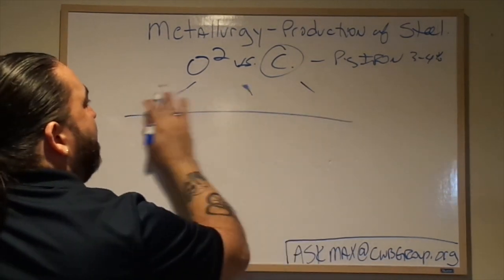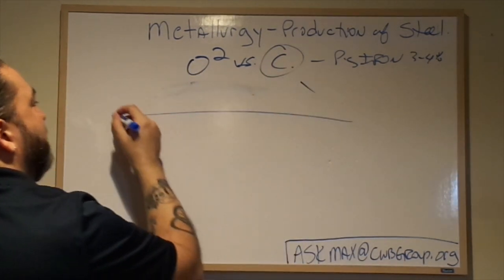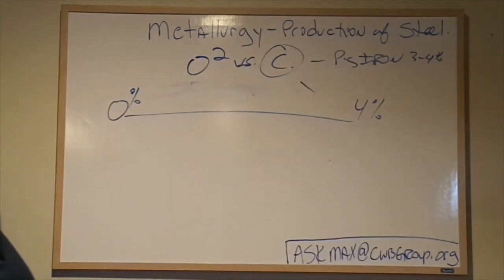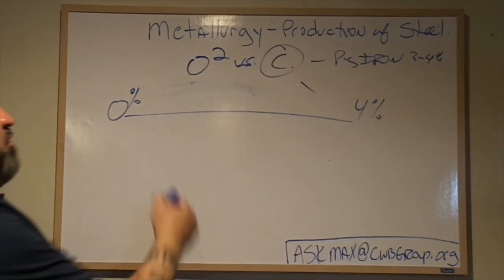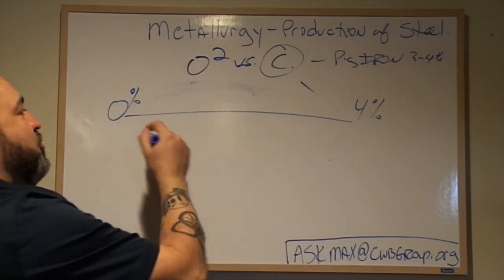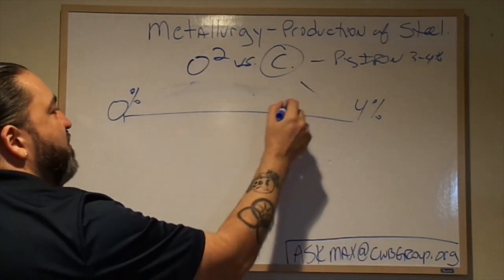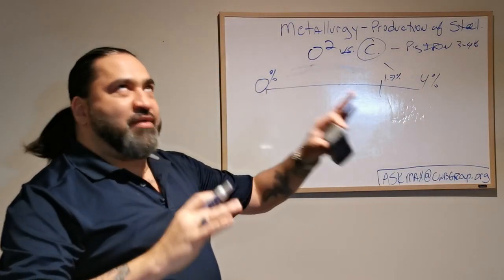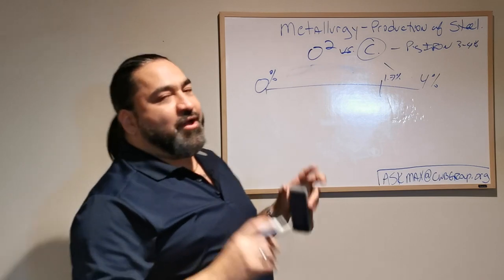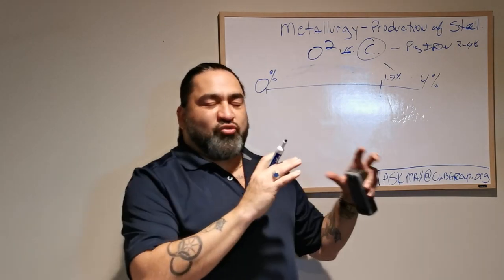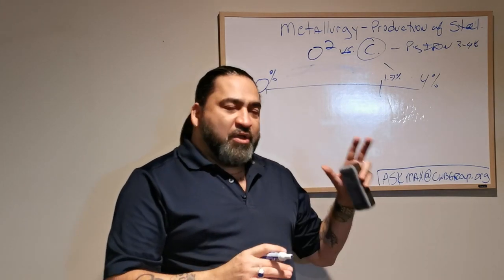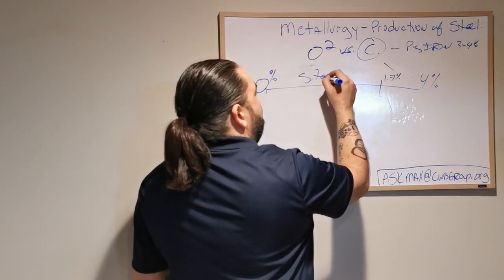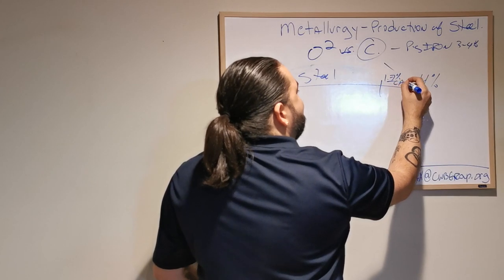Let's talk about that. We've got a line here — 0% carbon on one end, 4% on the other. When we talk about steel, generally we talk about steel anywhere from 0% up to about 1.7% to 2% carbon. Whatever number a textbook gives you, it's really not that specific — it's when carbon starts to get too saturated. From 0% to about 1.7%, these are all types of steel. And past that, we get into cast iron.